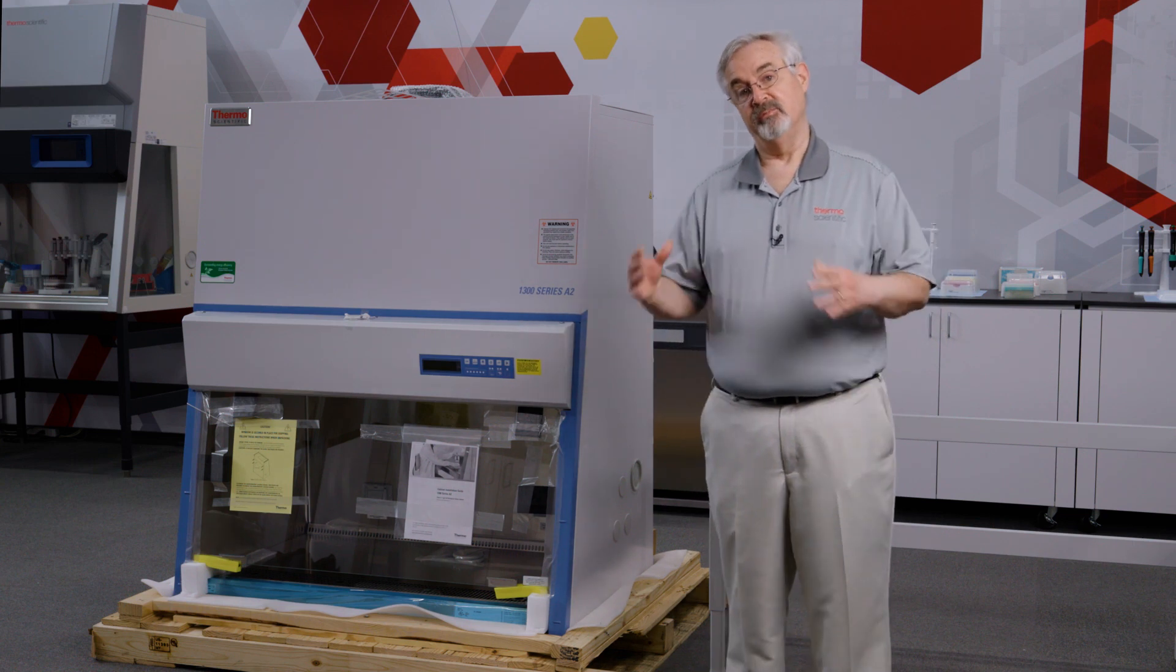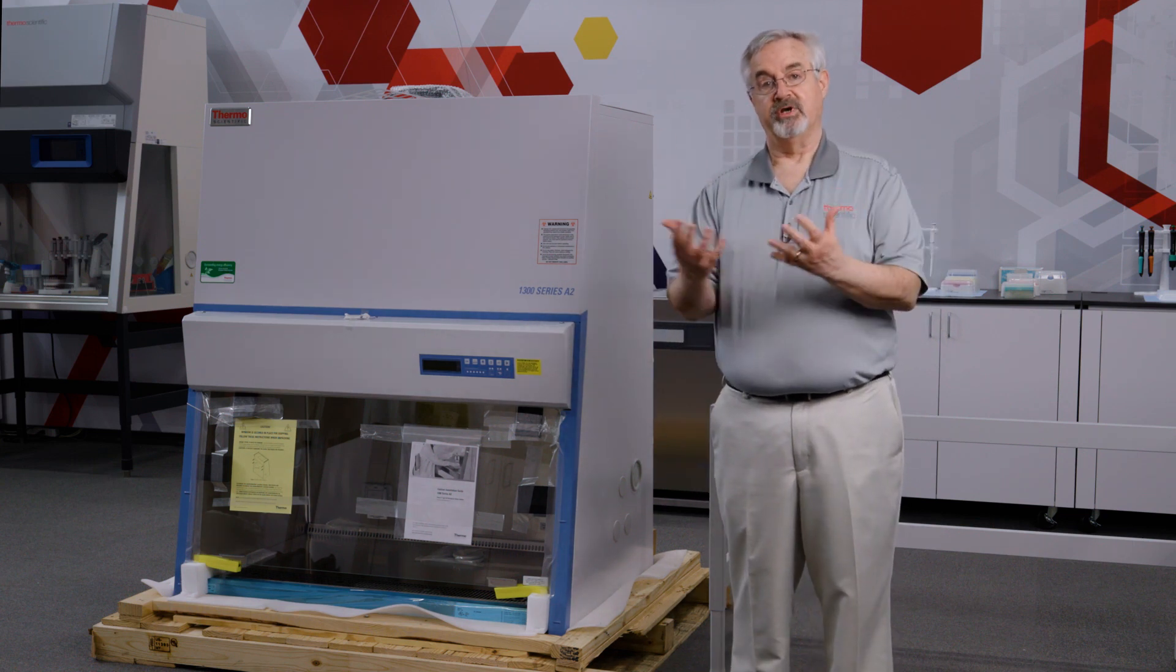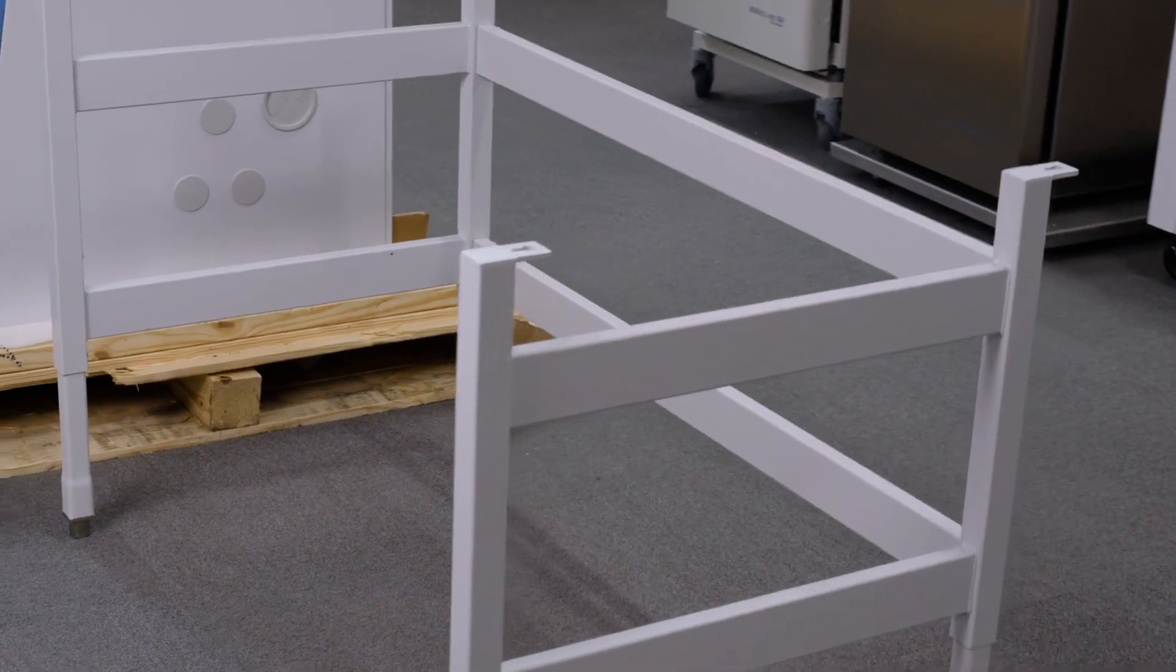When the cabinet arrives, it will be on a pallet with a cardboard case. Today, in the interest of time, we've removed that cardboard case, and we've also taken the stand off and assembled it. The stand was disassembled and packed and placed here against the back of the cabinet.